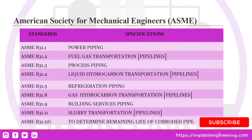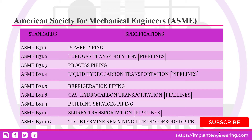The ASME has been used in the piping industry beginning with ASME B31.1, which is used for power piping. Power piping is the piping that is installed at any power plant.